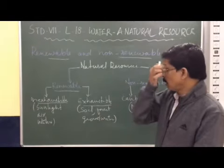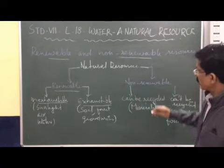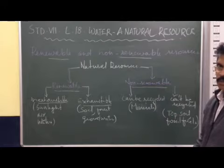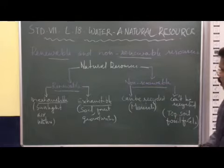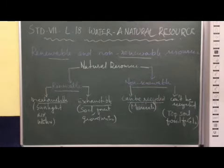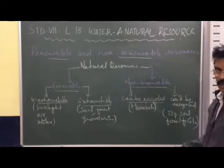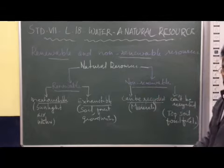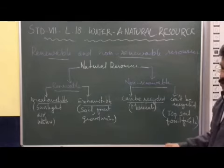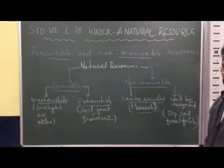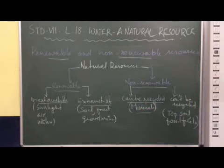Hence, renewable resources can be inexhaustible, and non-renewable resources are those which will be finished up however sparingly we use them. For example, non-renewable resources like minerals and metals — gold, aluminium, copper, iron — all of these can be recycled. After using, the leftover material can be melted and reproduced.